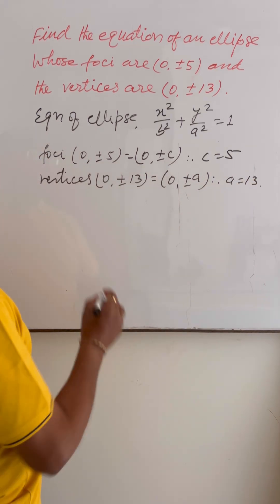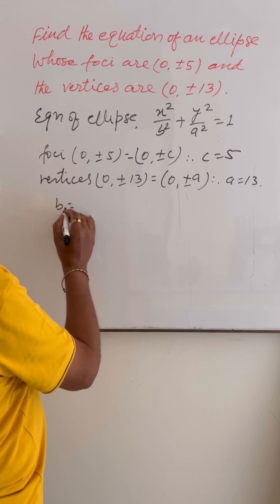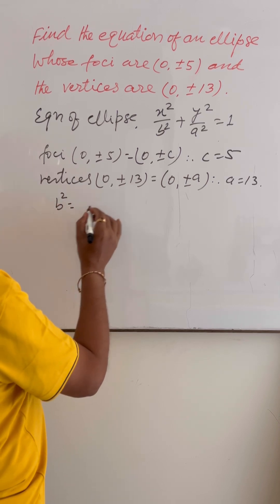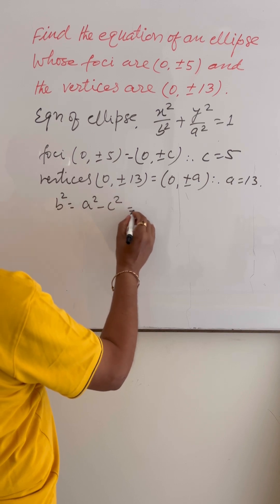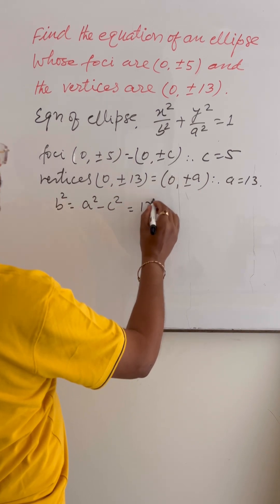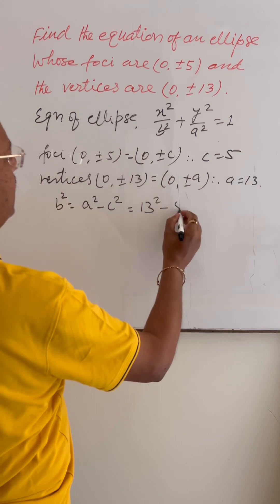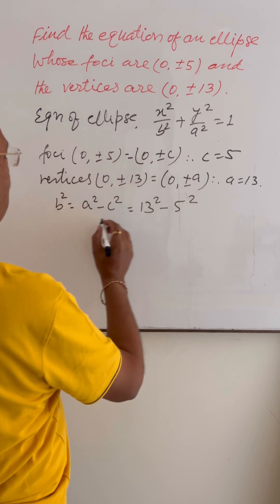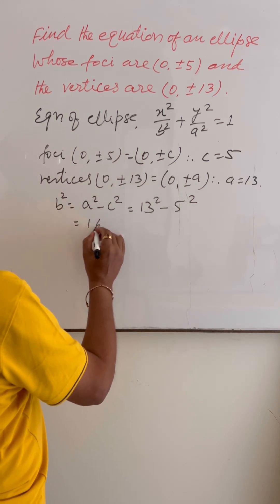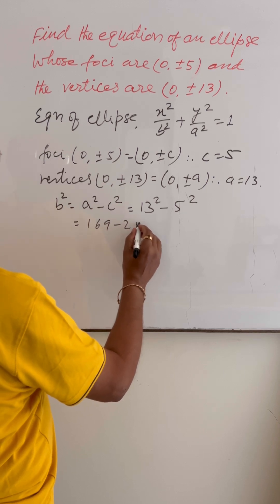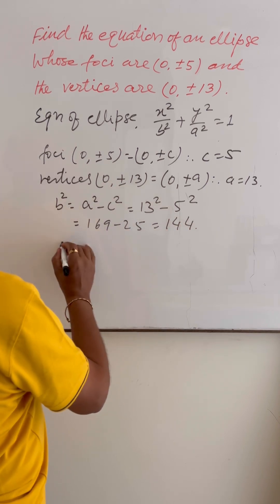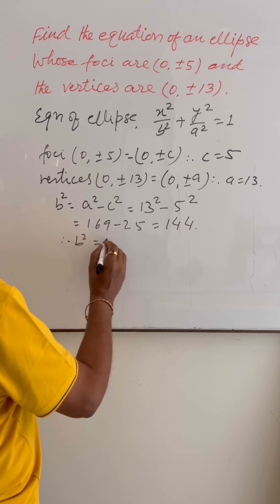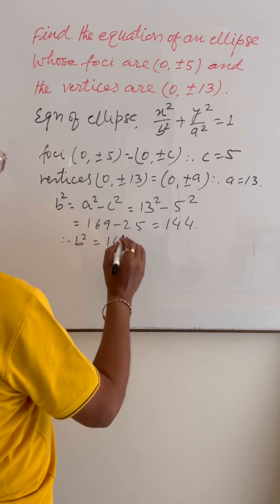Now we can find the value of b using this formula: b² = a² - c². a² means 13² and c² is 5². This equals 169 - 25 = 144. So therefore b² = 144.